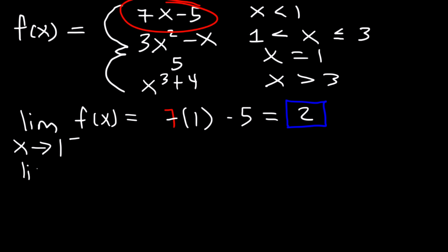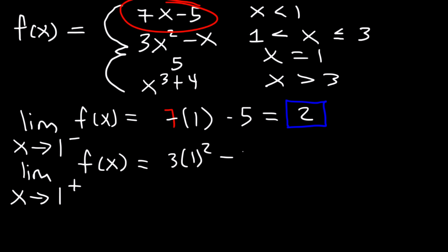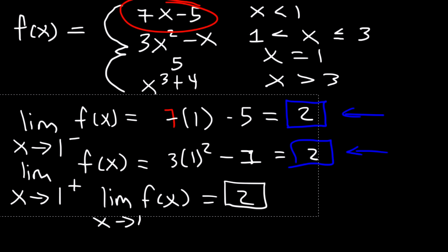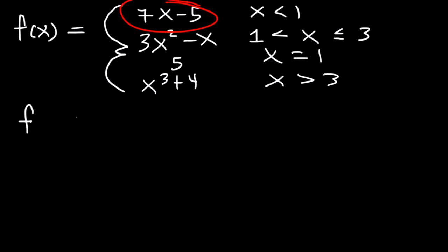For the right-sided limit as x approaches 1, we use 3x squared minus x. That's 3 times 1 squared minus 1, which is 3 minus 1, equal to 2. Since both one-sided limits equal 2, the overall limit as x approaches 1 is also 2. However, f(1) equals 5, because when x is exactly 1, the function is defined to be 5.